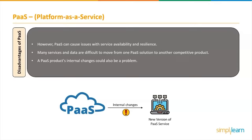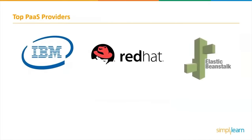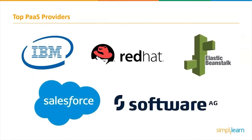Top platform as a service providers include: IBM Cloud Computing, a set of cloud computing services for businesses provided by IBM; Red Hat, a collection of tightly integrated technologies for building cloud infrastructure and developing cloud-native apps on premises; AWS Elastic Beanstalk, an Amazon Web Services application deployment orchestration solution; Salesforce, offering CRM services as well as enterprise applications for customer service, marketing, automation, analytics, and application development; and Software AG Cloud, an open and independent cloud platform.